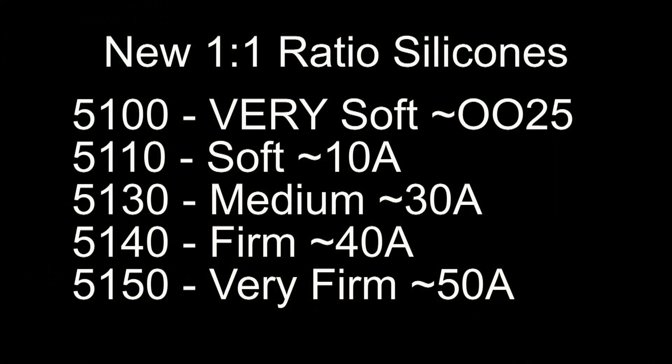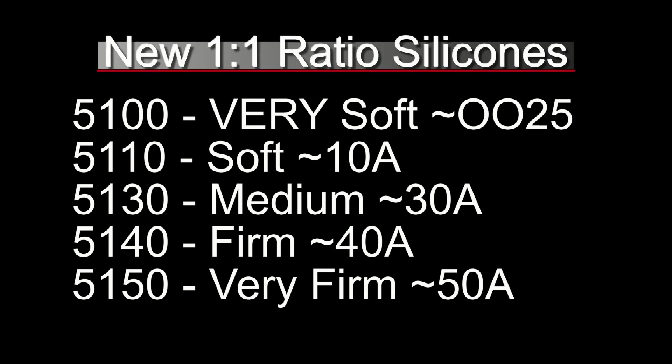Here are the new 1-to-1 mix ratio silicone formulas: the 5100 series. This is the really soft 0025—this formula cannot be thickened with Thixo and is mainly for pouring medical simulators, dolls, and silicone masks. Then we have 5110, which is like a soft Shore A10, similar to human skin, and that can be thickened with Thixo. We have 5130, a Shore A30, and the 5140 we'll be using here, and the very firm 50A 5150.